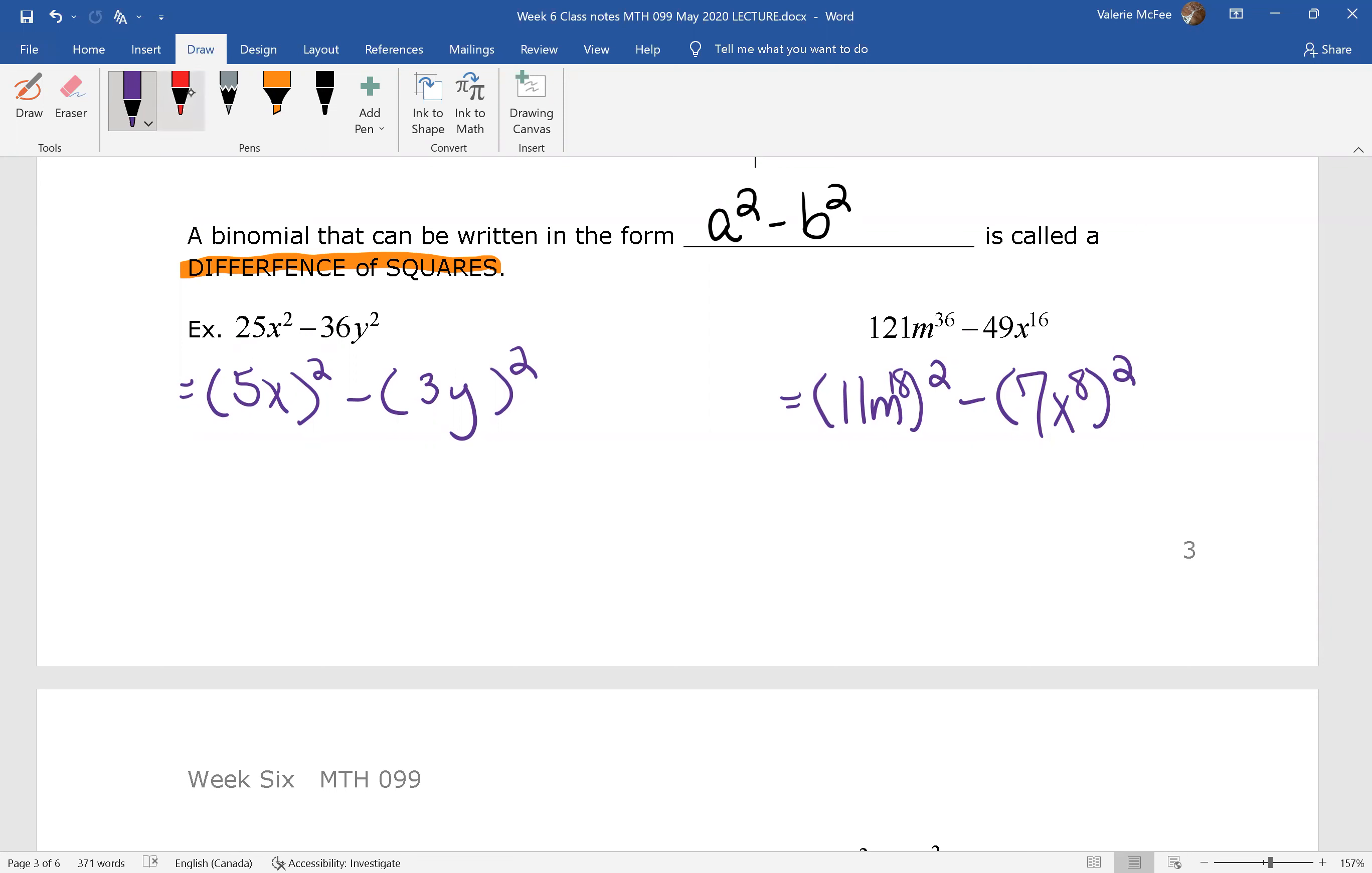Now let's be clear, though, this is not factored form. All this does, when we write it like this, is help us figure out what a equals and what b equals. This is important if we want to use that formula we talked about for a difference of squares.